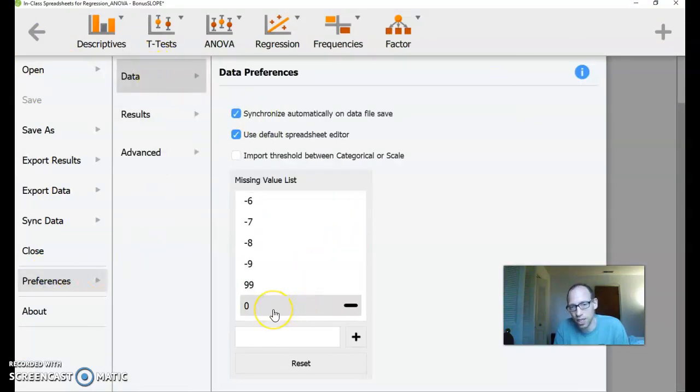we had counted zero as a missing data point for some other thing we were analyzing. And that carries across, even though that wasn't this data set, JASP remembers your preferences for missing values.